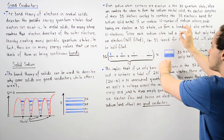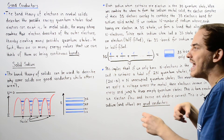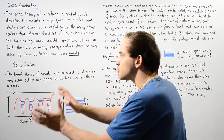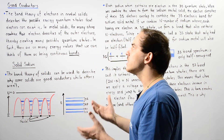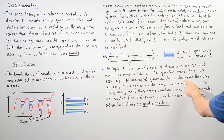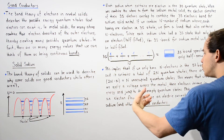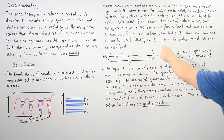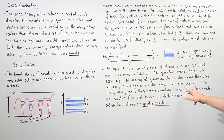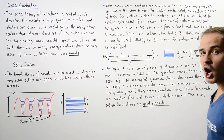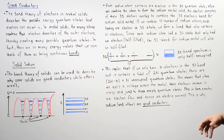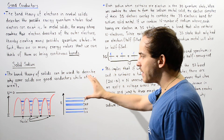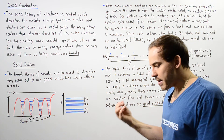When many electrons jump to these unoccupied states, they create a flow of electrons, which creates an electric current. That is exactly why solid sodium, as well as other metal solids, are good conductors of electricity. When we apply a voltage difference across the solid metal, these electrons increase in energy and jump to empty quantum states, creating an electron flow and therefore an electric current — making sodium and other solid metals good conductors.